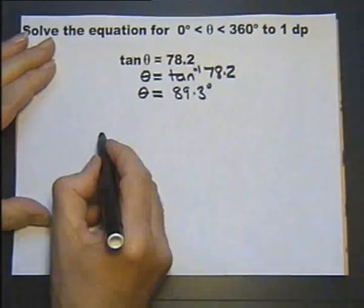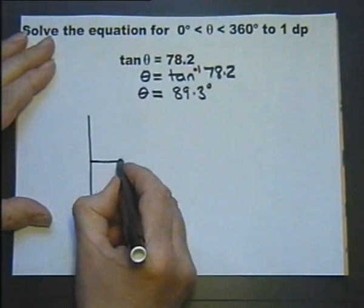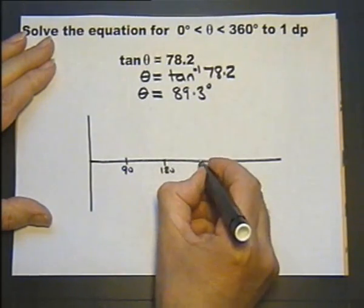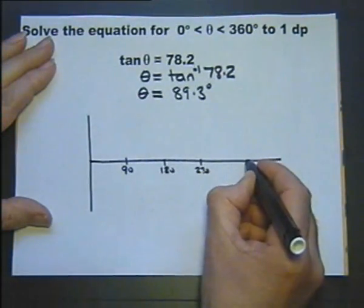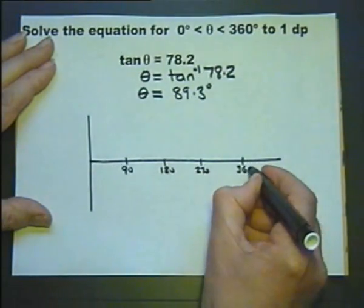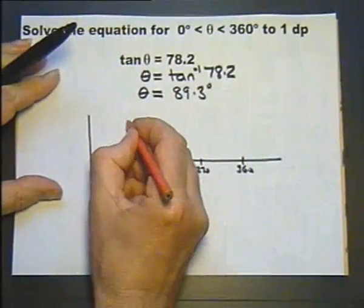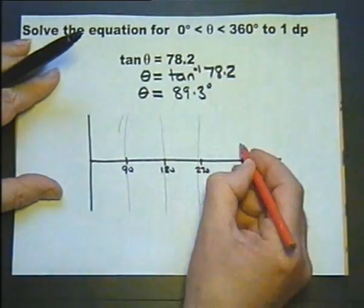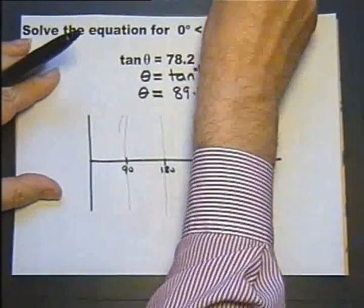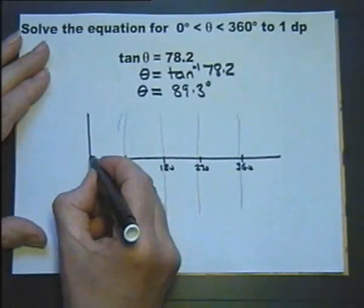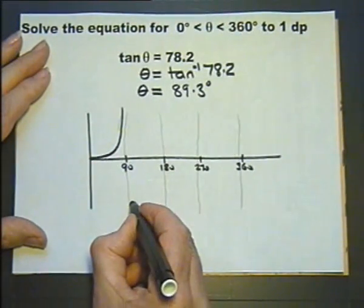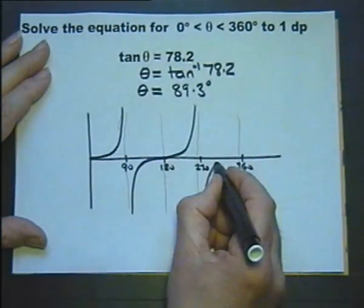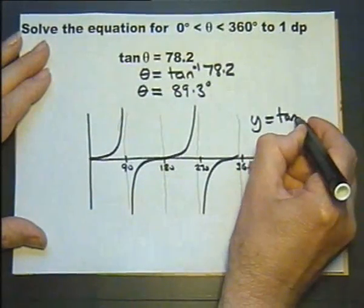But what other possible answers can there be? Well, we need a quick sketch of the tangent graph. To do that we need to draw our asymptotes. Now this is how I'd do it in the exam. I wouldn't use a ruler, I'd just see how quick I can get it done. That produces a suitable graph I can use to answer the question. So this is a graph of y equals tangent of theta.